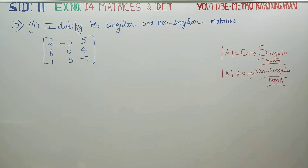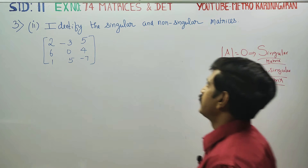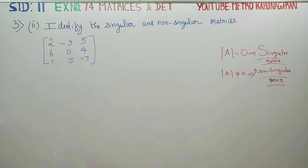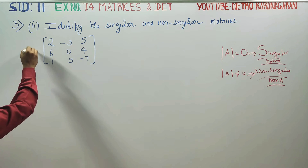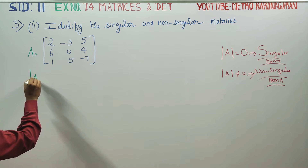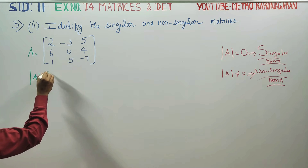Dear 11th standard students, in exercise no. 7.4, 7.3, second subdivision, identify the singular and non-singular matrix. One matrix that you can get — let's name this as A. This is a determinant value, determinant A.